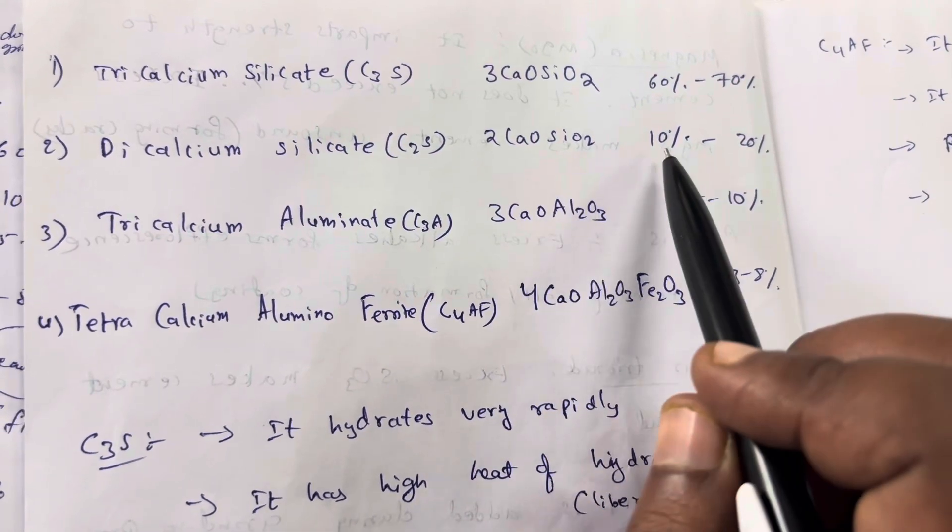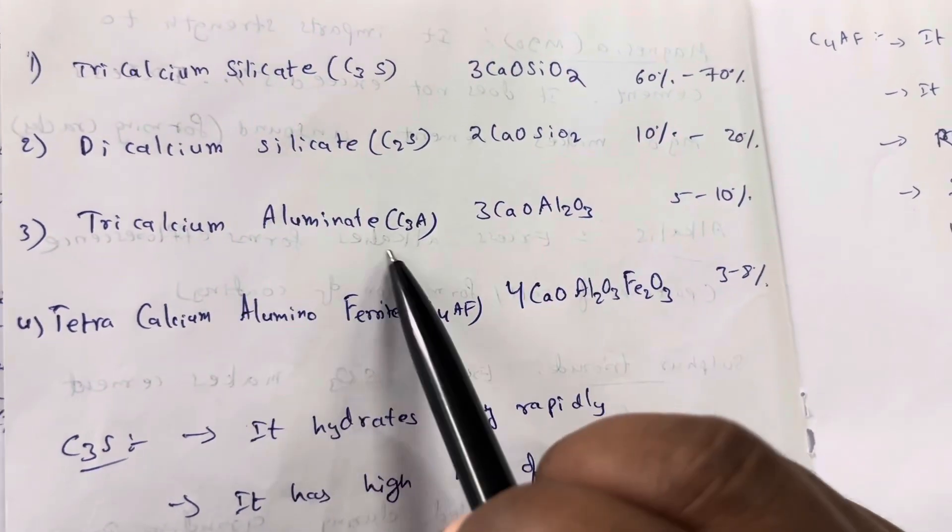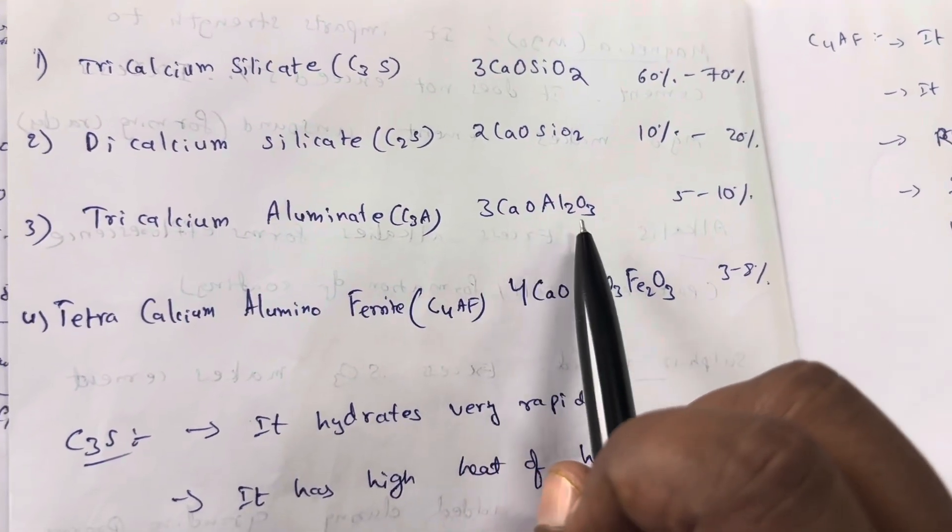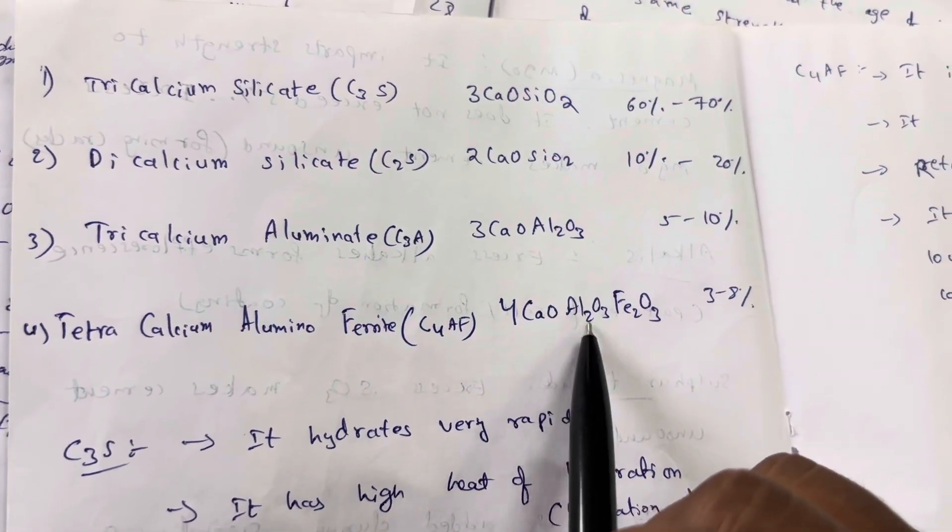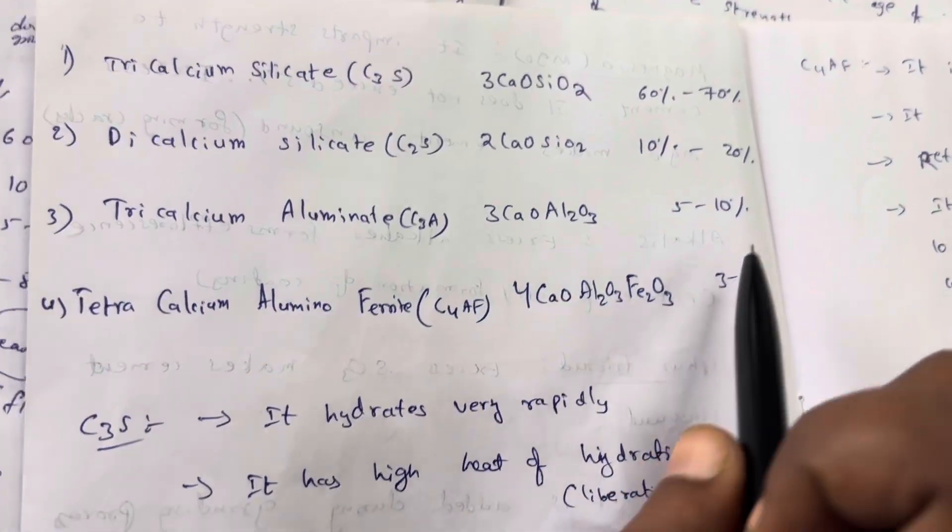Tricalcium aluminate C3A is 3CaO·Al2O3, 5-10%. Tetra calcium aluminum ferrite C4AF is 4CaO·Al2O3·Fe2O3, 3-8%.